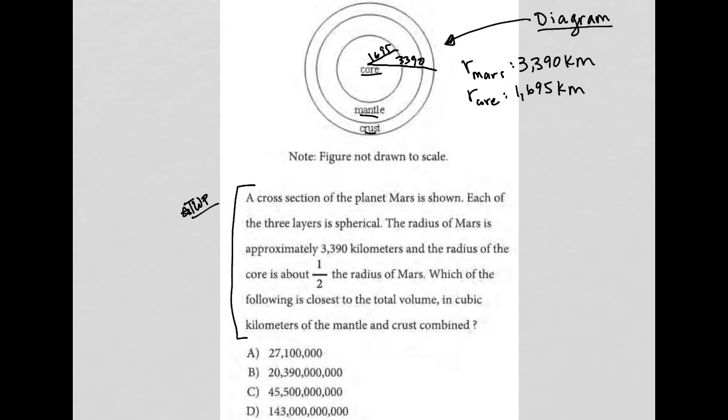The question goes on to say, which of the following is closest to the total volume in cubic kilometers of the mantle and crust combined? So, in essence, we want the volume of everything besides the core. The best way for us to think about that is kind of like scooping out the core. This blacked out area here represents the part we're going to take out.